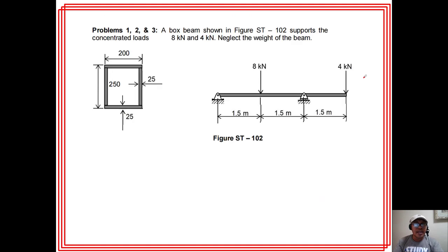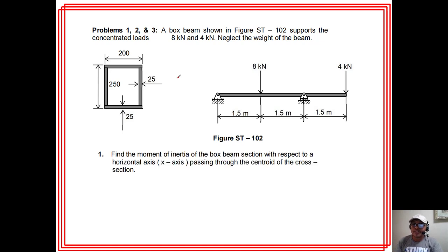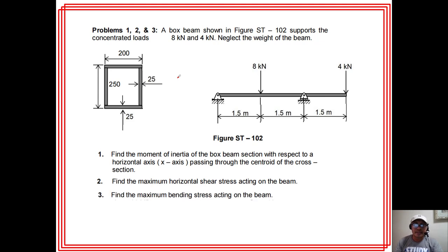Problem 1: A box beam supports concentrated loads of 8 kN and 4 kN as shown. Neglect the weight of the beam. The cross-section is a rectangular box — a rectangle with a hollow inner portion. Questions: (1) find the moment of inertia, (2) find the maximum horizontal shear stress, (3) find the maximum bending stress acting on the beam.